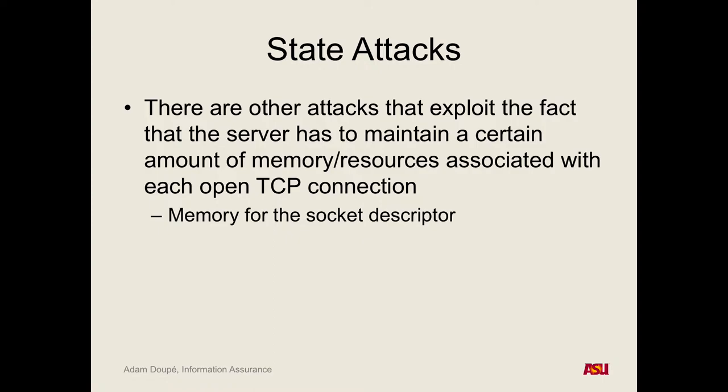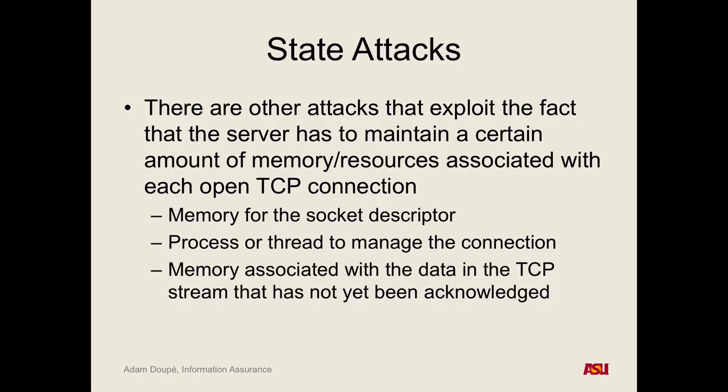If every time you make a request to a web server it forks and creates a new process, all an attacker needs to do is make 65,000 requests and keep them open — now nobody can make any more requests because Apache can't fork. The same applies to threads, which also have limits. Here we're moving up from attacking the OS's TCP/IP implementation to attacking the application itself. There are all kinds of fun attacks to play with. This is a generalized approach to identifying denial of service vulnerabilities in networks.